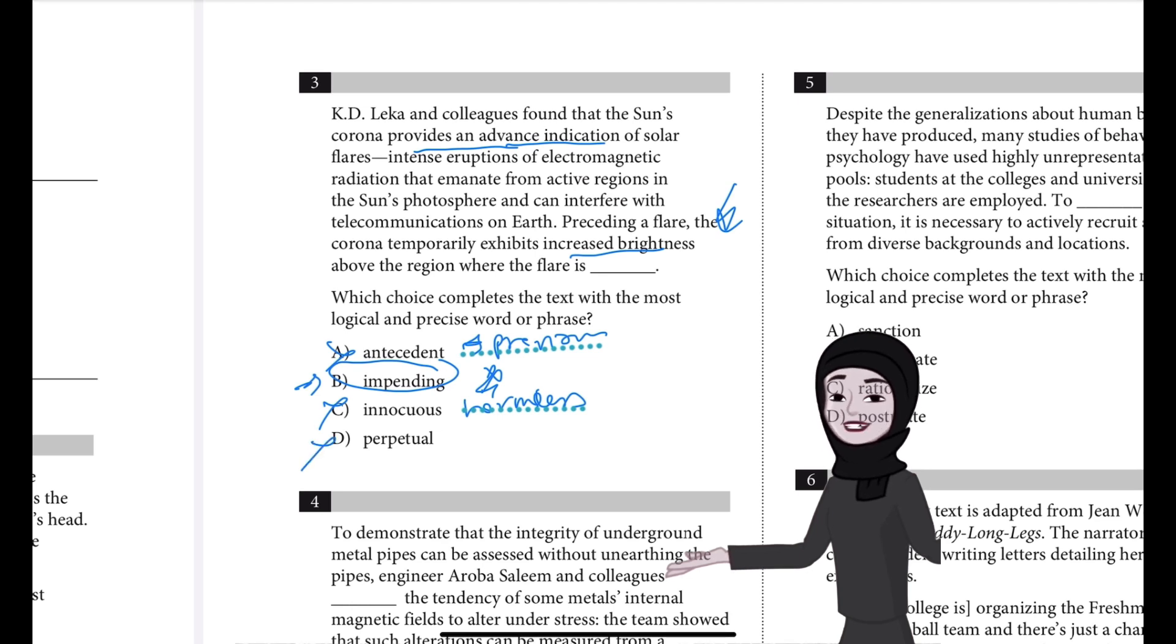And then D says perpetual. This is incorrect because if the solar flares have an advanced indication of their appearance, then there must be a time before the appearance when they don't exist. Whereas perpetual means never ending.